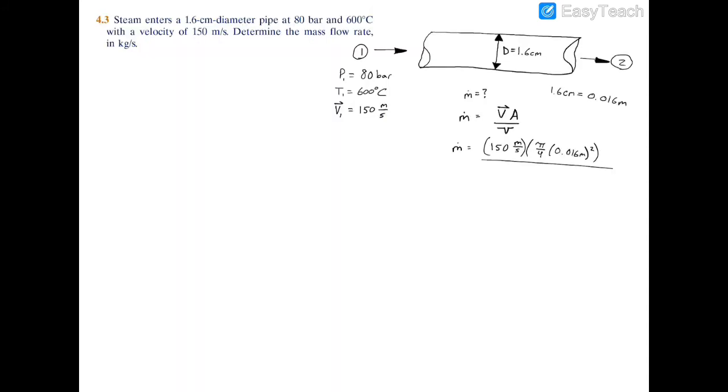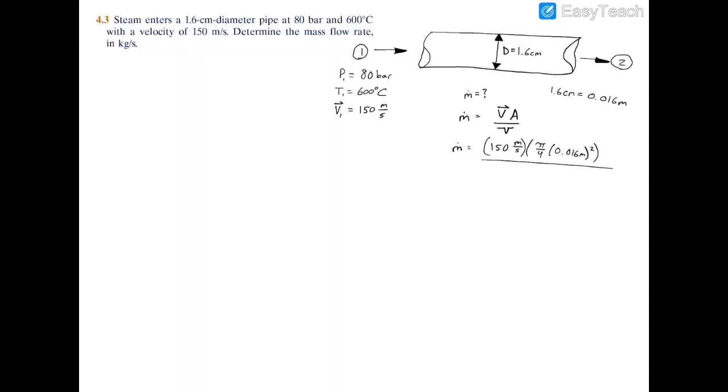The specific volume is 0.04845 meters cubed per kilogram. You divide by 0.04845.